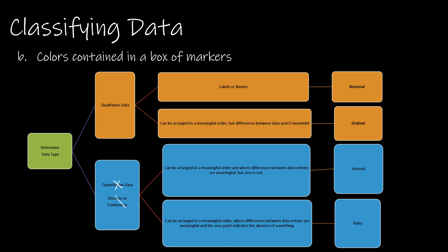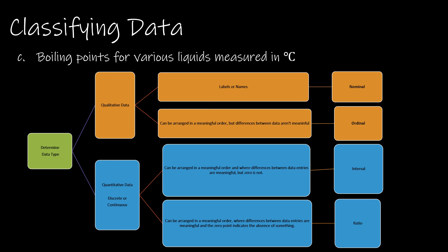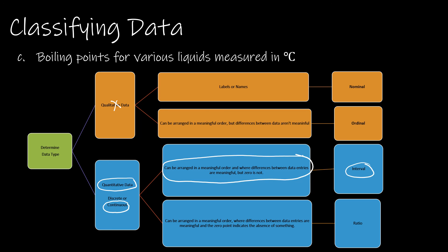Colors contained in a box of markers — this is obviously not quantitative data, so it is qualitative, and it is neither discrete nor continuous. Can those colors be arranged in a meaningful order? No — this is just a label or a name, so it is nominal. Next: boiling points for various liquids measured in degrees Celsius — that's a measurement, so it's quantitative and continuous. Does zero indicate the absence of something? In degrees Celsius, zero does not indicate the absence of heat, so this is interval.